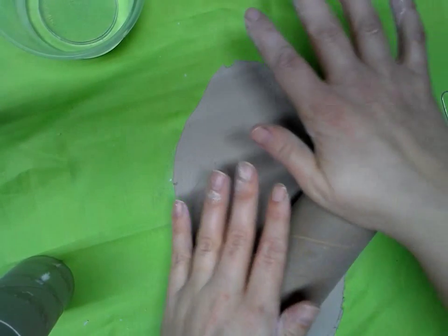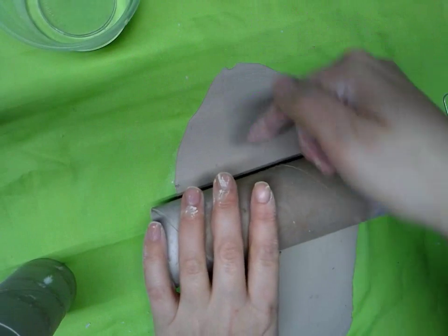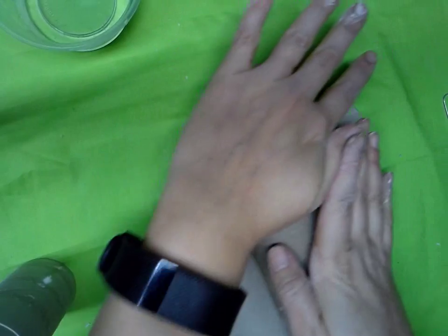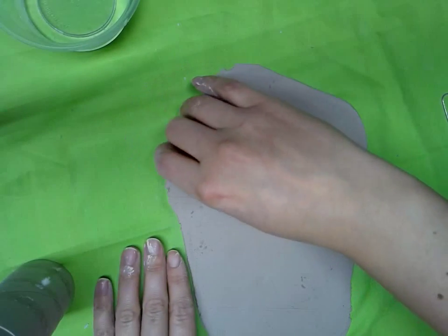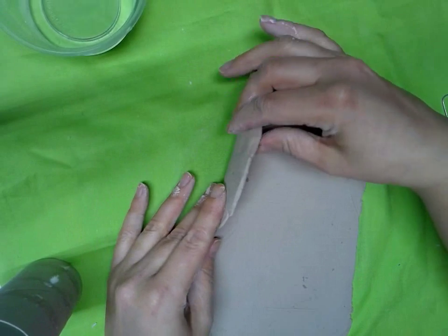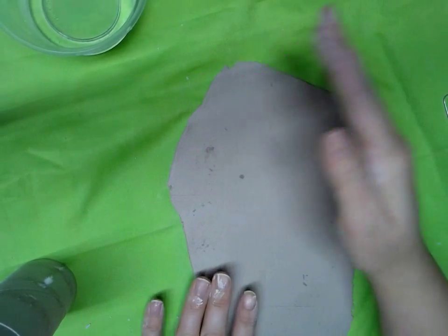And just always make sure you're starting in that middle and working your way out. If you start on one side and go all the way across, a lot of times it will kind of curl over it. So you can see now I have my clay pretty thin. You can see how thin it is. So now I'm ready for the next step.